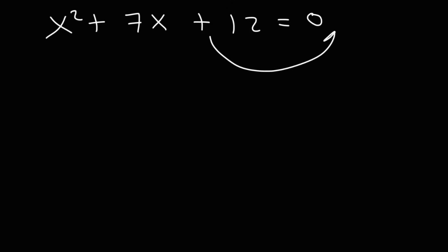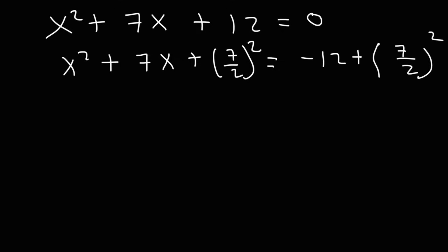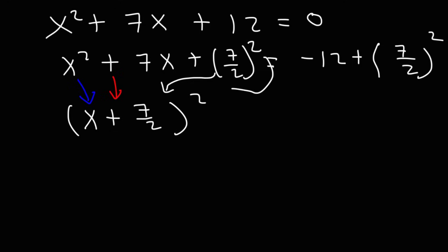Just as before, we're going to move the 12 from the left side to the right side, so it's going to change from positive 12 to negative 12. At this point we can complete the square — looking at the middle coefficient, we're going to take half of it and then square that result. Whatever you do to the left side, you must also do to the right side. We can factor the trinomial: we have an x, and there's a plus sign in front of the 7x. The number before we square it is 7 over 2, and the square goes on the outside.